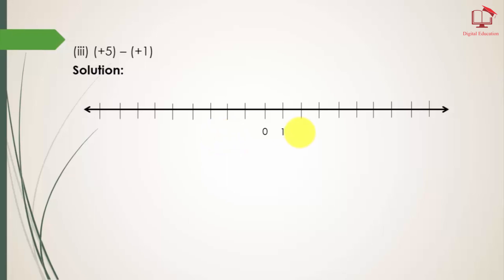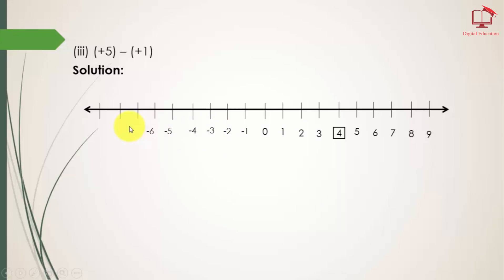So on the right: 0, 1, 2, 3, 4, 5, 6, 7, 8, and 9. On the left hand side: minus 1, minus 2, minus 3, minus 4, minus 5, minus 6, minus 7, minus 8, minus 9. The first point is 5, so we will draw an arrow from 0 to 5.